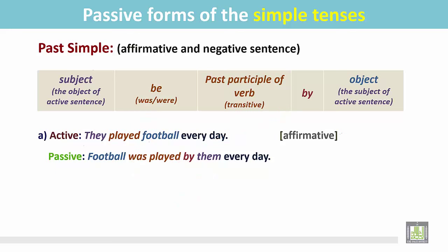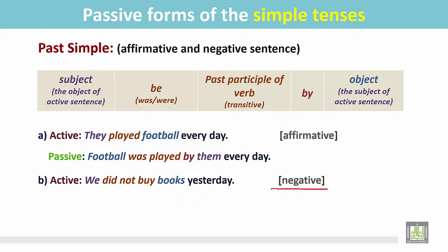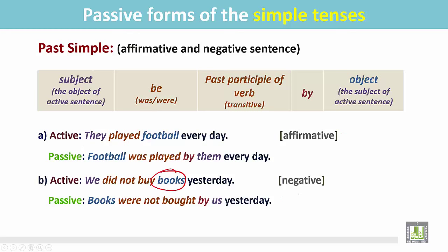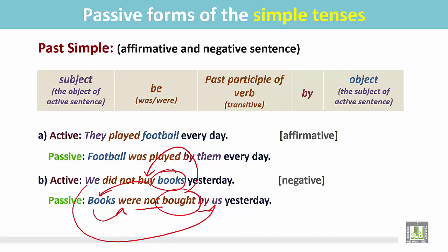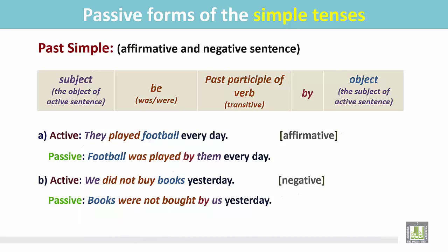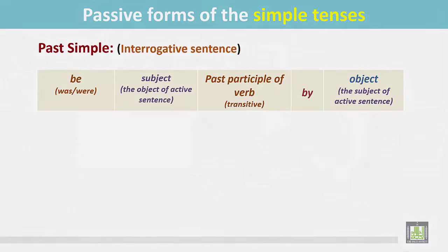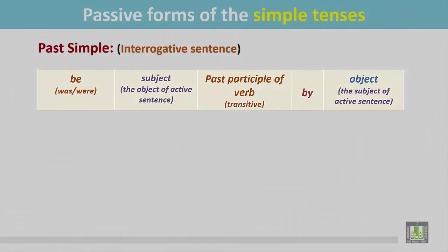We get the passive: 'Football was played by them every day.' Another example — 'We did not buy books yesterday' — a negative sentence in the past simple. The passive form is: 'Books were not bought by us yesterday.' 'Books' was the object and now becomes the subject in the passive form. Since it is plural, we put 'were'; to make it negative, we add 'not'; then the past participle of the verb, the preposition 'by', and the subject of the active sentence becomes the object.